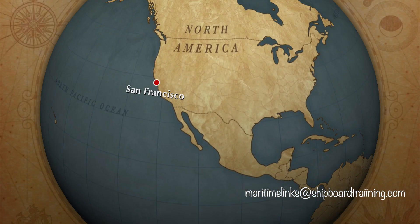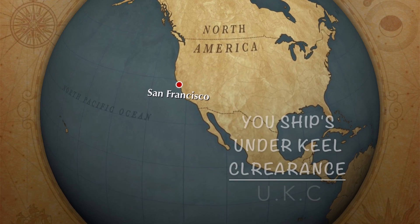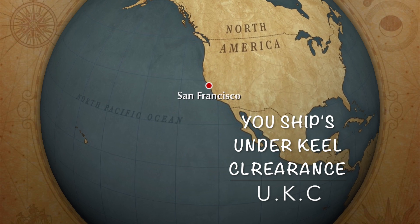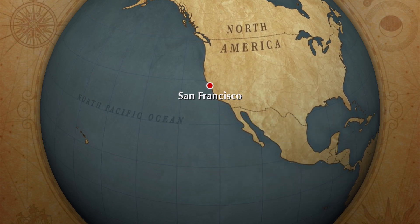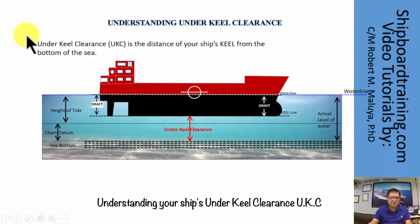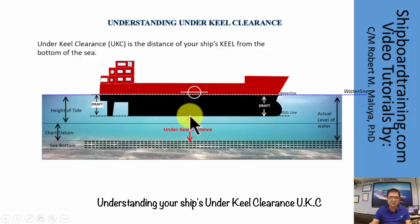This is the ShipboardCleaning.com video tutorials. In this tutorial we will be discussing the underkeel clearance. The underkeel clearance is the distance of your ship's keel from the bottom of the sea — in the image, this is the distance from the bottom of the sea to the ship's keel.